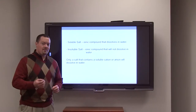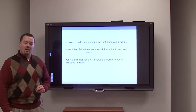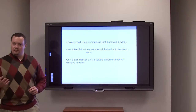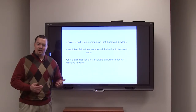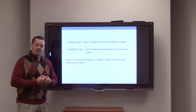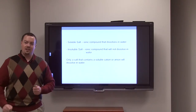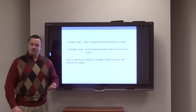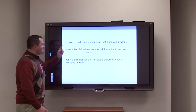Whenever we're referring to a salt, we're talking about an ionic compound. An ionic compound forms when a cation — a positively charged ion — and an anion — a negatively charged ion — come together and form a bond. This forms an ionic compound. Your cations are going to be your metals, which are located on the left side of the periodic table. Your anions make up your nonmetals, which are located on the right side of the periodic table.